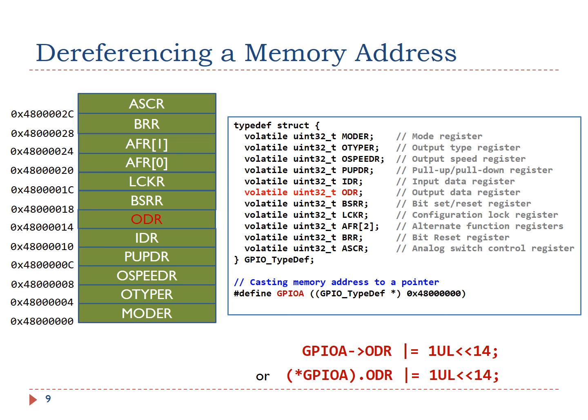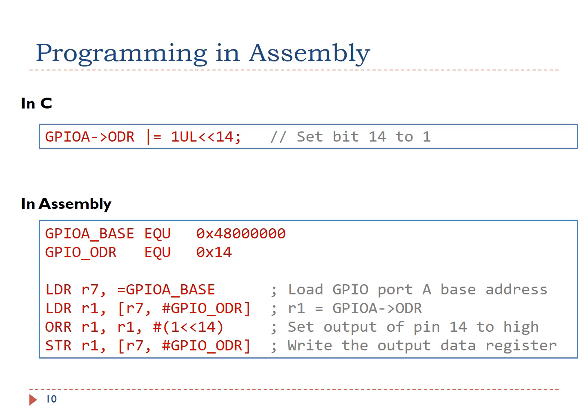The asterisk GPIOA gets the structure that GPIOA points to. If the program has to be written in assembly, we can use the EQU directive to define two constants. The first constant is the base memory address for port A, and the second constant is the offset of the ODR register. First, we load the base memory address into register R7. Then we load the ODR value into register R1. Next, we modify R1. Finally, we store the modified value back to the ODR register.